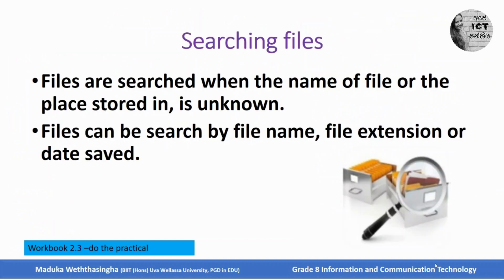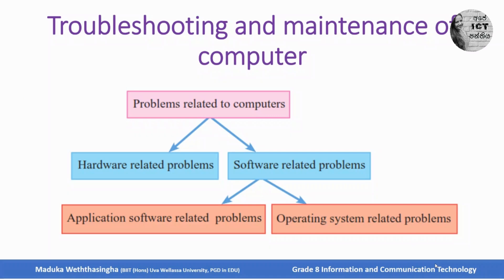There are two main important file permissions: read only and hidden. Then we discussed how to search a file. So today we have to start a new topic: troubleshooting and maintenance of a computer. When we discuss about the computer, it consists of hardware, software and liveware.